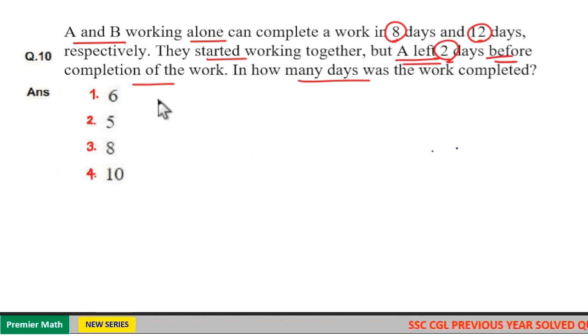Here A can complete a work in 8 days, B can complete it in 12 days. Both are doing the same work so take the LCM. LCM is 24. 8 goes 3 times in 24, 12 goes 2 times in 24.